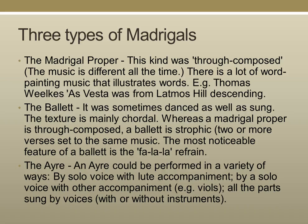The third type was the air. An air could be performed in a variety of ways: by a solo voice with lute accompaniment, by a solo voice with accompaniment from viols — which is a relative of the violin — or with all parts sung by voices, with or without instruments.